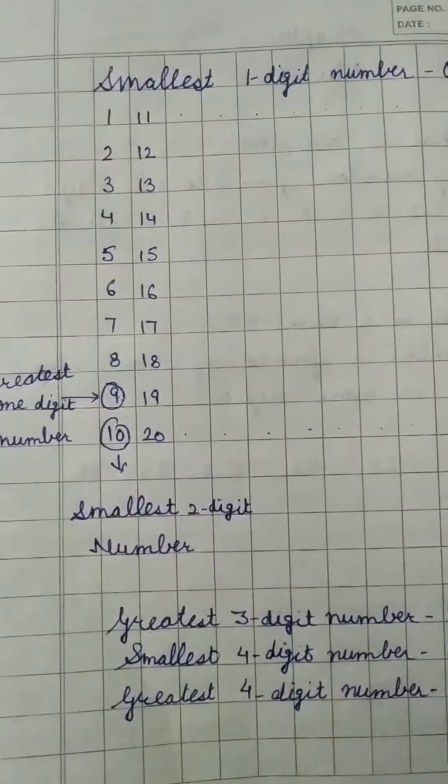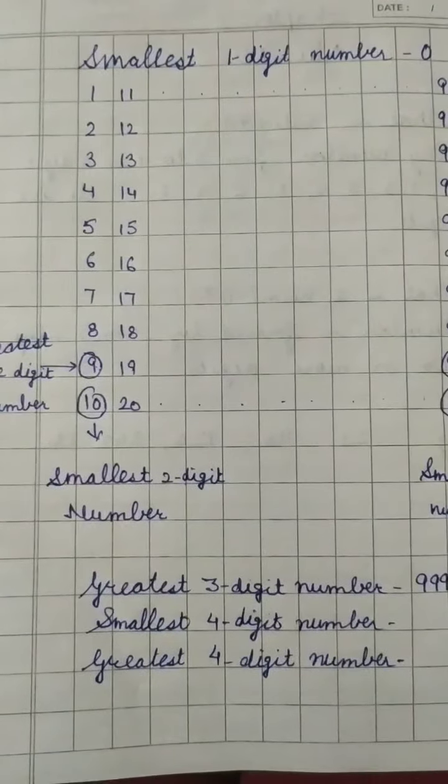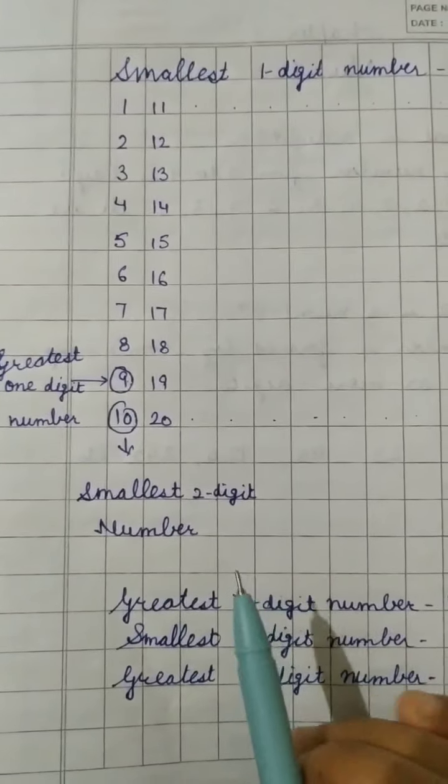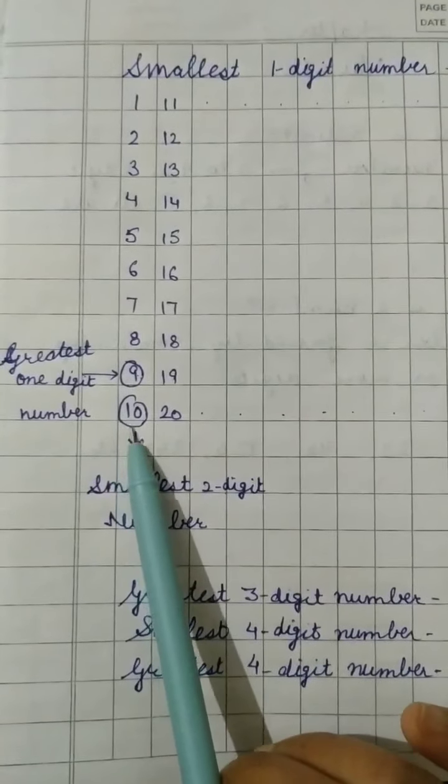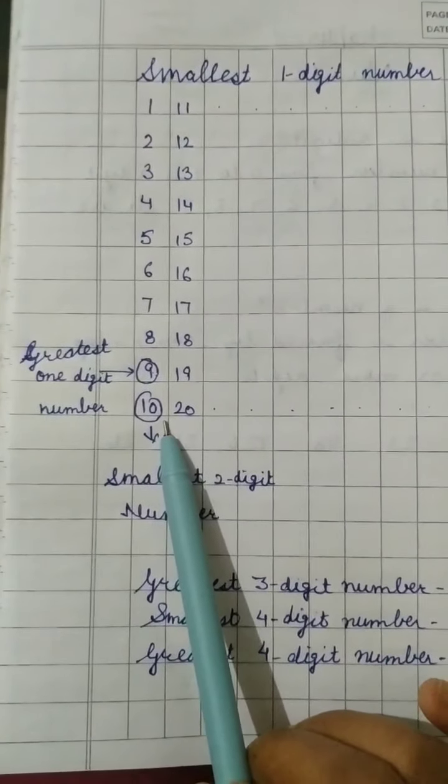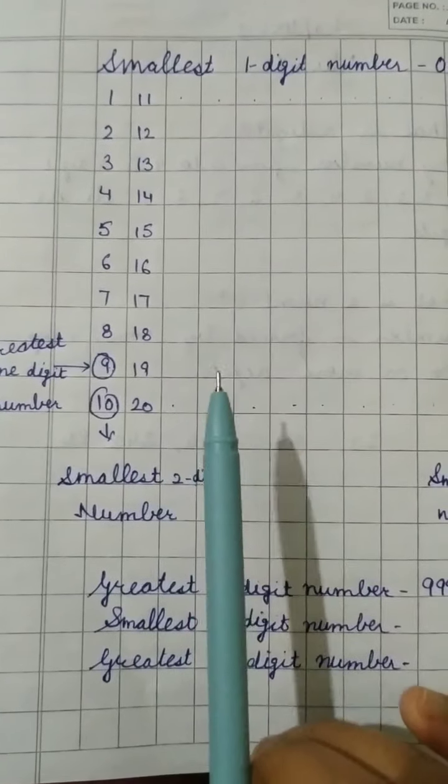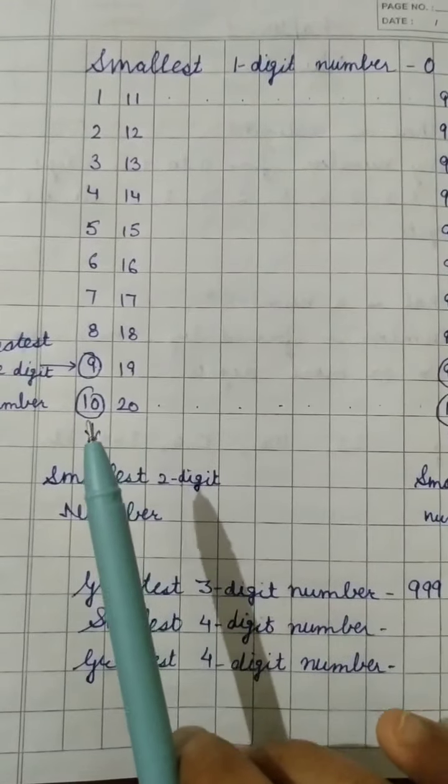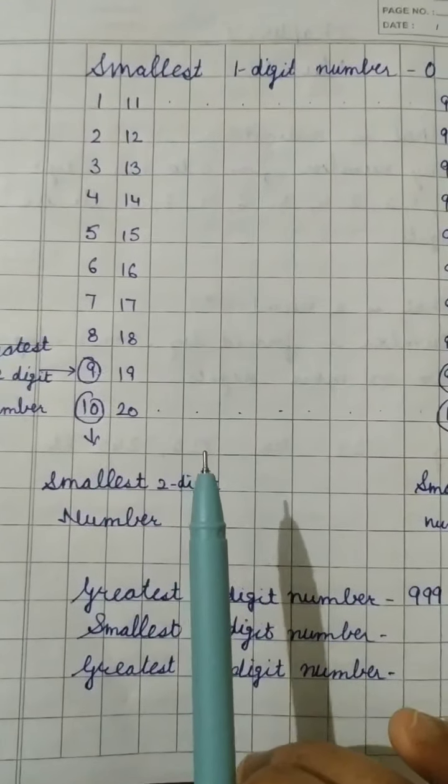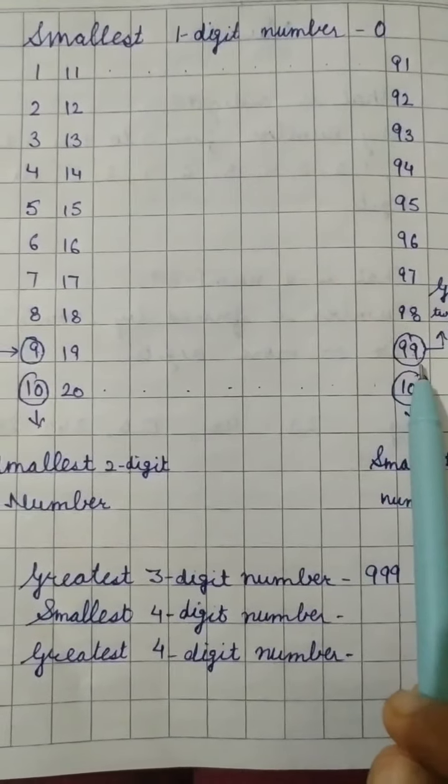See children from all this process we have found out that the smallest numbers are comprising of 1 and 0 and the greatest number comprises 9. So you have to remember that whenever it is asked that write the smallest two digit number you have to use 1 and 0 and when it is asked greatest two digit number you have to use both 9's.